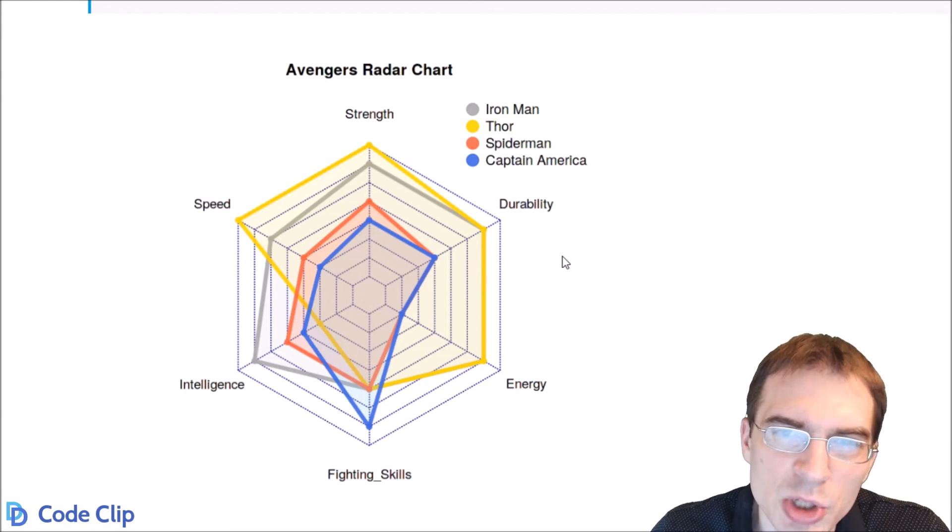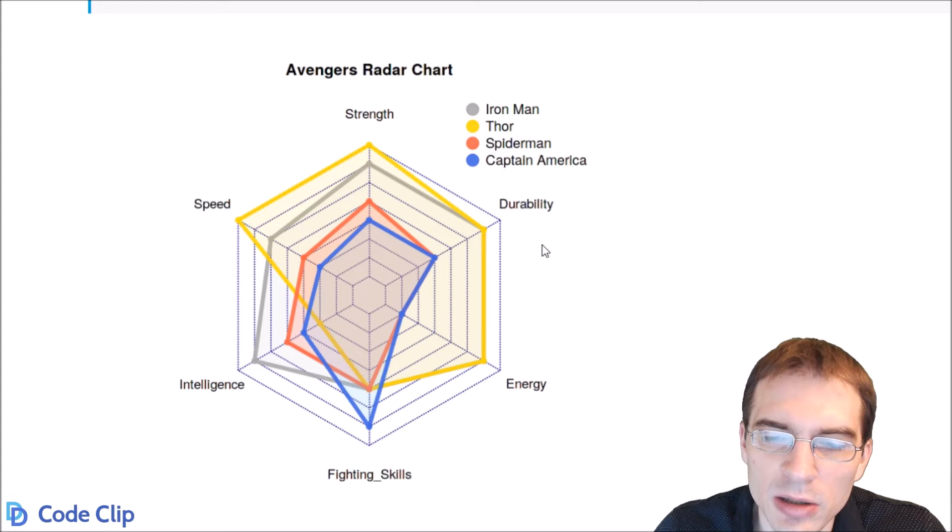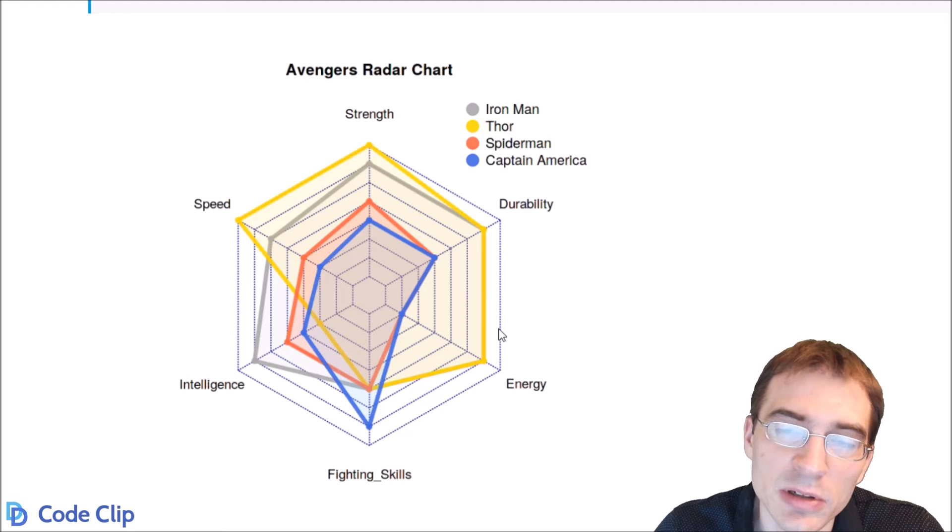Now radar charts are probably not the best way to convey complicated information. It's actually often hard to distinguish between different values on different axes because they're laid out radially and trying to take in information that way is kind of difficult. Also the area of the polygon that the character's stats create depends on which point you put each stat on.